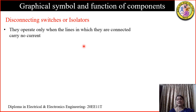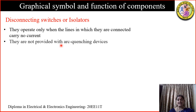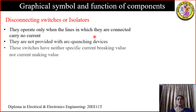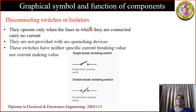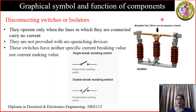Unlike the circuit breaker, which operates when load current is flowing, isolators will operate when there is no load current. So the isolator is not an arc quenching medium and has no making or breaking value. In the figure, we can see graphical symbols of different types of isolating switches — either a single break or a double break isolator. This is how an isolator looks; the movable part can be opened and all three contacts operate together.